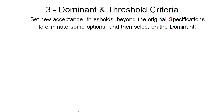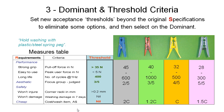The third method is the dominant and threshold criteria method. To eliminate some options, we look at our four pegs. Previously there was a specification that all four pegs met, making them all possible solutions. Rather than go through the weightings, we're going to slightly lift some of these specifications to make them a little more demanding and hopefully eliminate some candidates. Our most important criterion — cost — we haven't set any threshold on, keeping it in reserve so that if a couple of options remain at the end, we can choose the cheapest one.